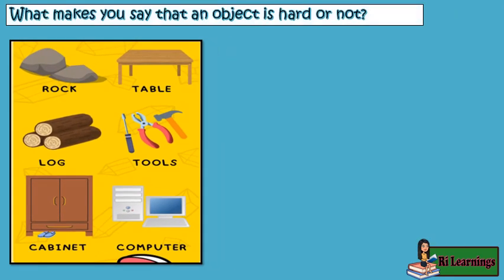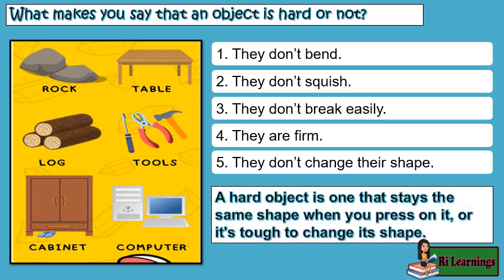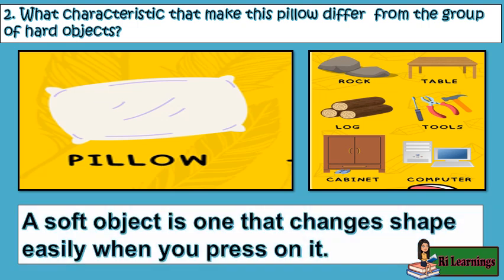What makes you say that an object is hard or not? They don't bend, they don't squish, and they keep their shape. What characteristic makes this pillow differ from the group of hard objects? A pillow is an example of a soft object. A soft object is one that changes shape easily when you press on it.